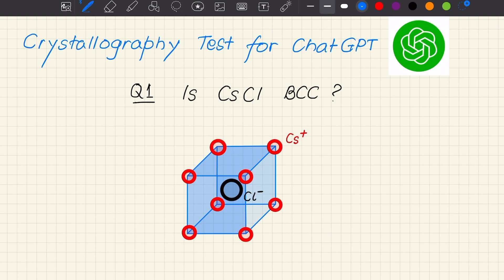This is not the case in this structure. So since corners and body centers are occupied by different atoms, only the corners can be taken as the lattice point. So the structure becomes simple cubic.